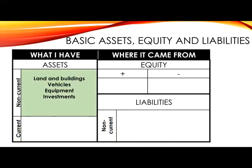Non-current assets would include items such as land and buildings, which refers to the property owned by the business. Vehicles would be the delivery vans, motorbikes, etc., that are used to generate an income for the business through delivering goods. It would also include equipment, which could be furniture, computers, factory machinery, cell phones — anything that is going to be used.